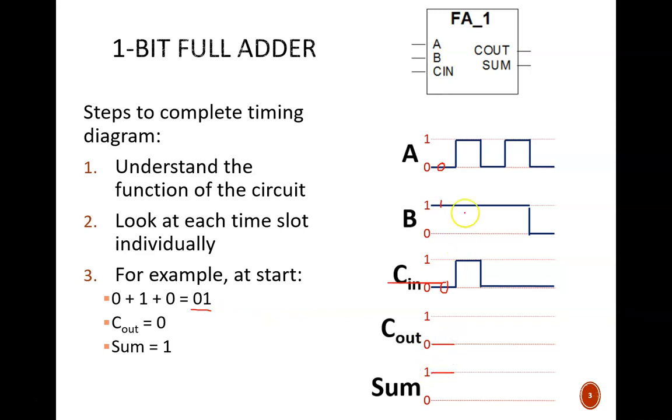The next time slot shows 1 plus 1 plus 1, which equals binary 1 1. Therefore, both output bits are high. The next time slot shows 0 plus 1 plus 0, which equals 0 1.